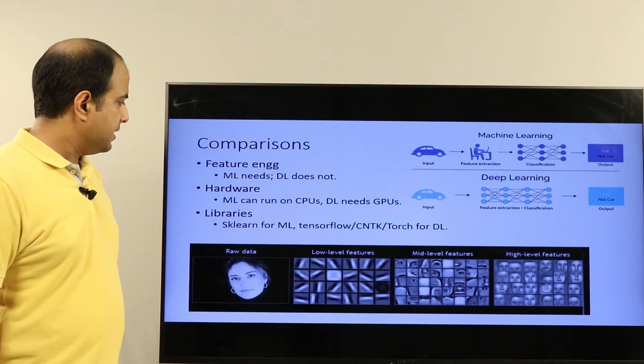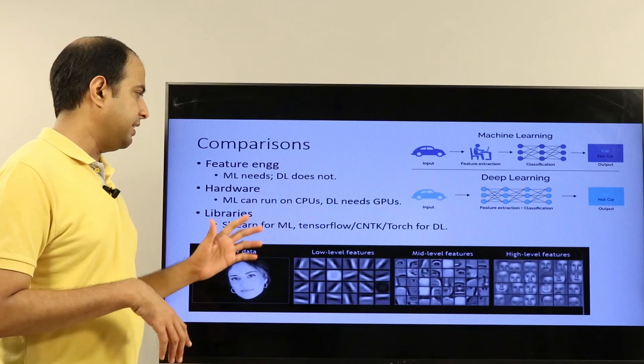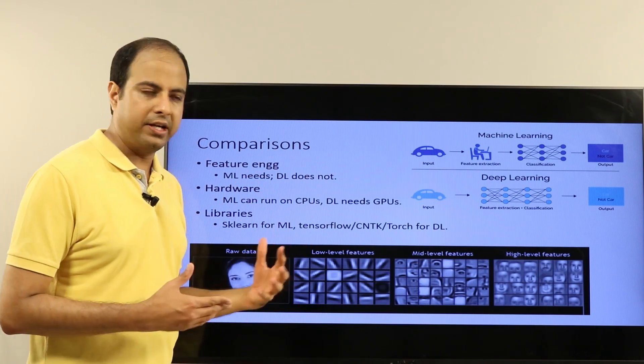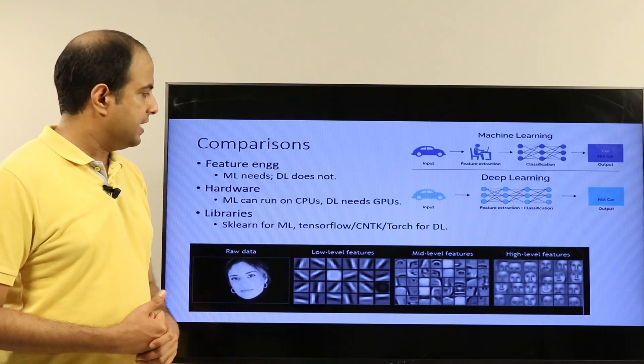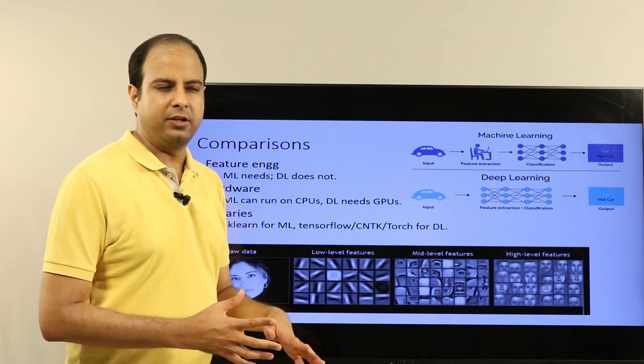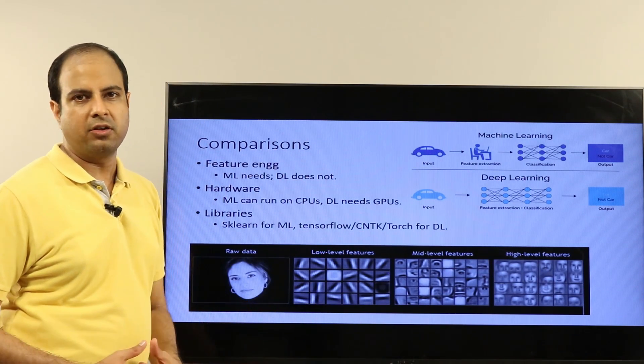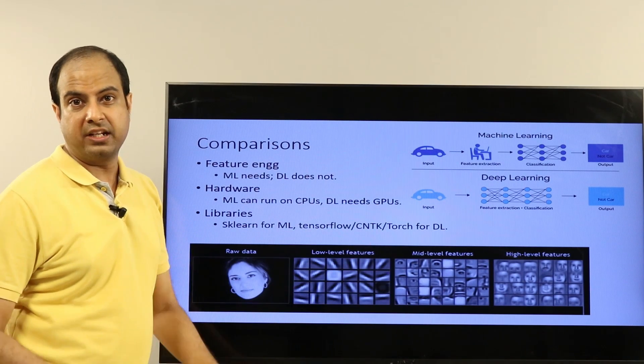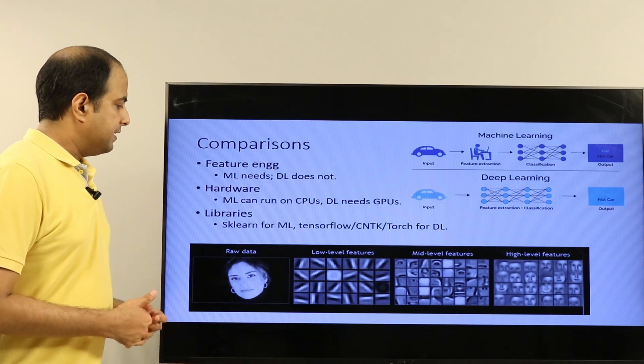Hardware-wise, ML can run on CPUs—typical CPUs—doesn't really require lots of hardware. While deep learning has very heavy hardware requirements. Learning any reasonable deep learning model on CPUs is usually not a great way. For any good model that you want to learn from large amounts of data, you need GPUs to train these models. In fact, some models really take days to train even on GPUs, so deep learning is really compute intensive.